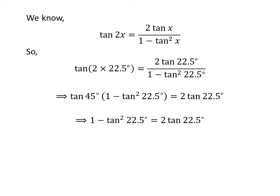Here, I have shifted 2 times tangent of 22.5 degrees from the right-hand side to the left-hand side and then multiplied the whole equation by minus 1. So we get: square of tangent of 22.5 degrees plus 2 times tangent of 22.5 degrees minus 1 is equal to 0.